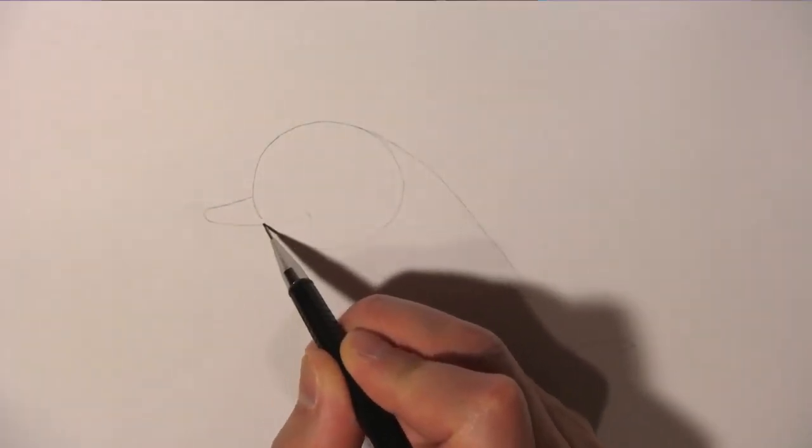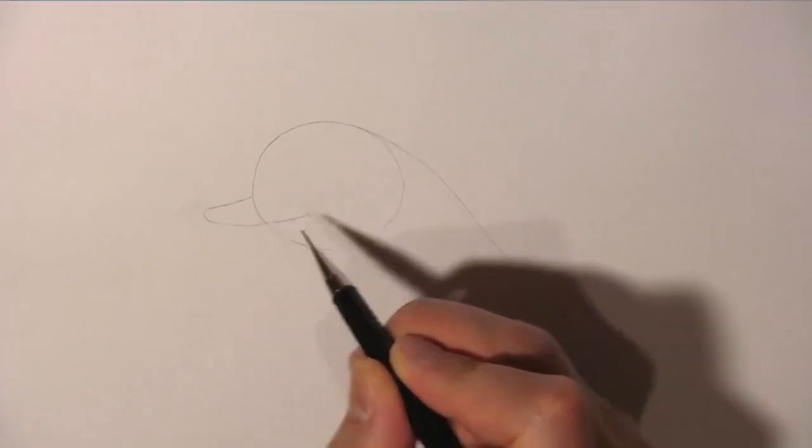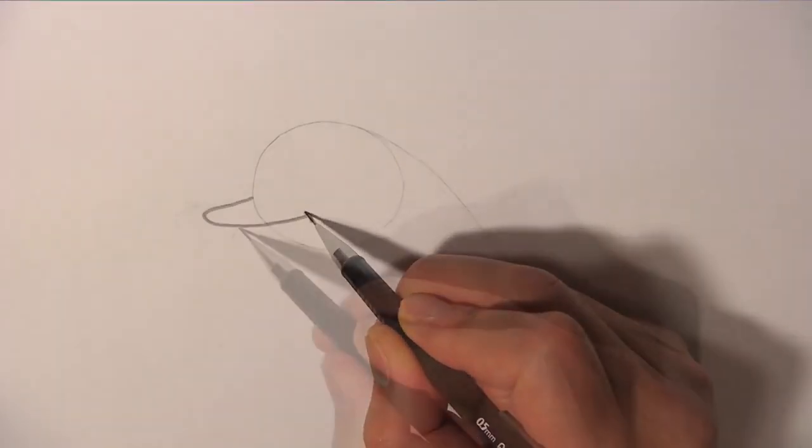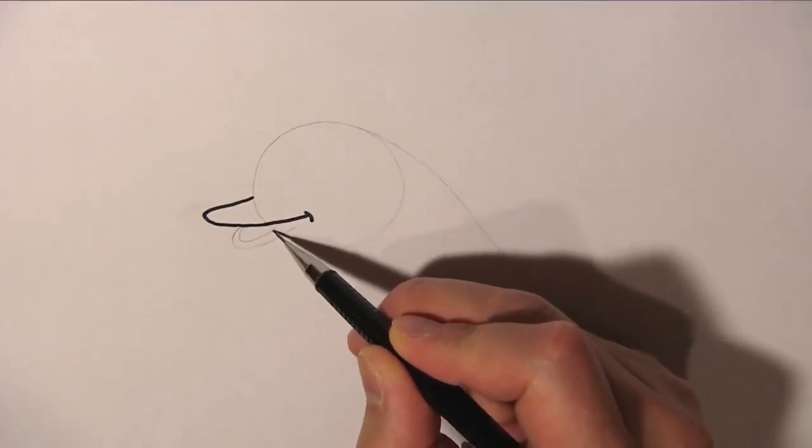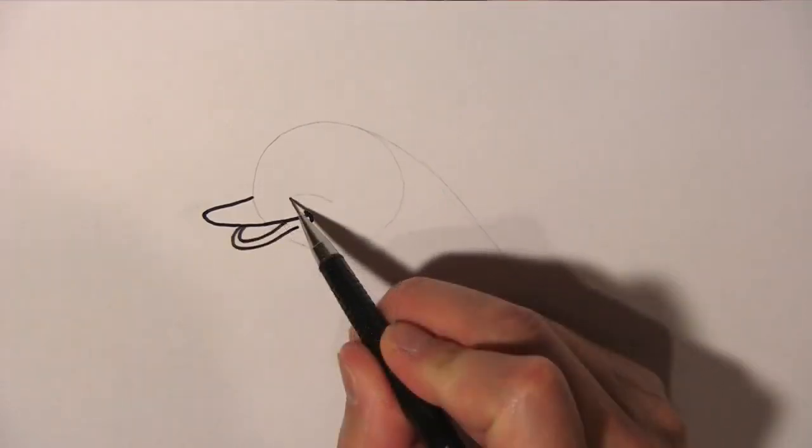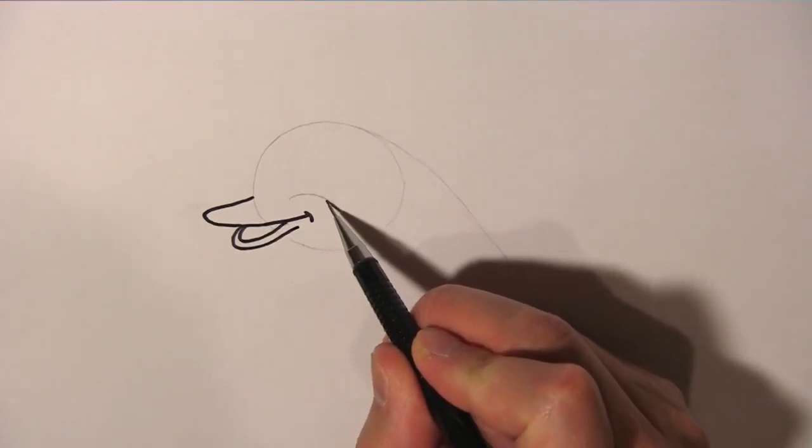Let's draw the dolphin's upper beak like so. And then we draw the lower beak like this. Draw a curved line for the cheek.